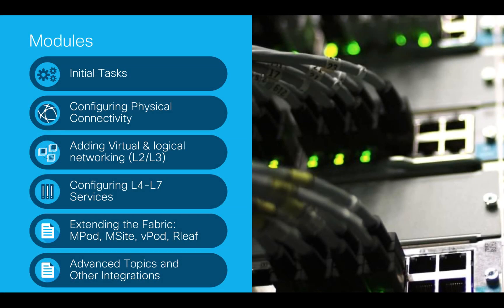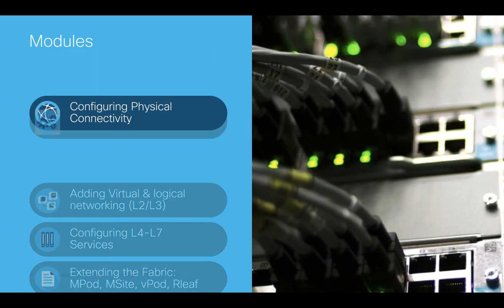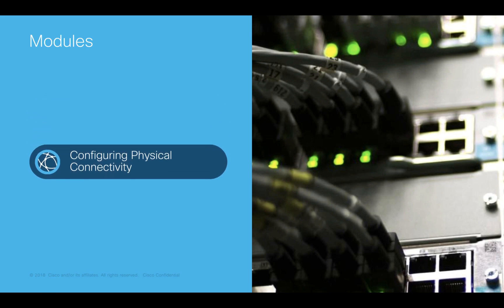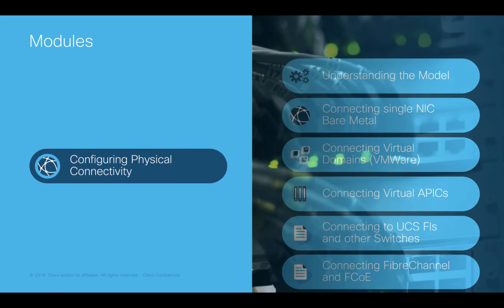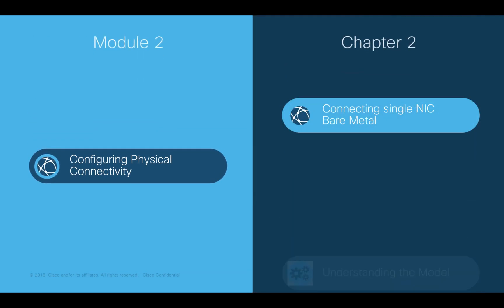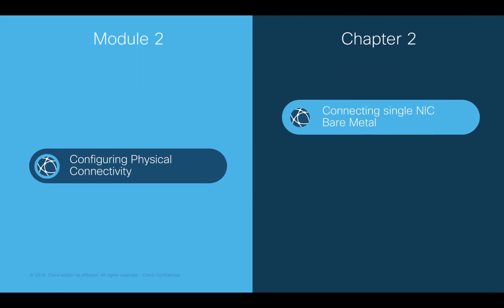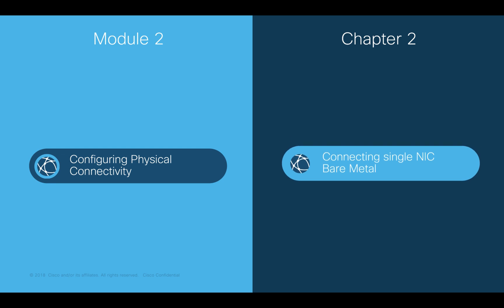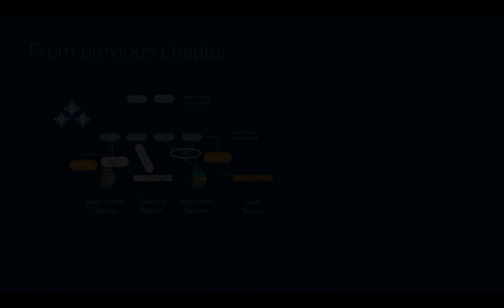Welcome to ACI, the Network Made Simple learning series. In this video we will cover Module 2, Configuring Physical Connectivity, Chapter 2: Connecting Single-NIC Bare Metal Servers.